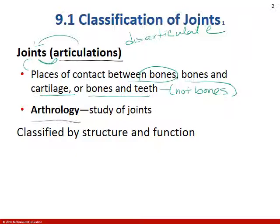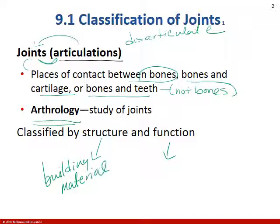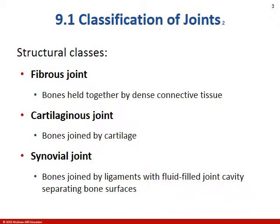The study of joints is called arthrology and we have to look at the structure and the function. I think of the structure as building material. We'll talk about the fact that we have different joints based on the type of material used to create the joint. We also classify joints by their function — how much they move, their functionality.